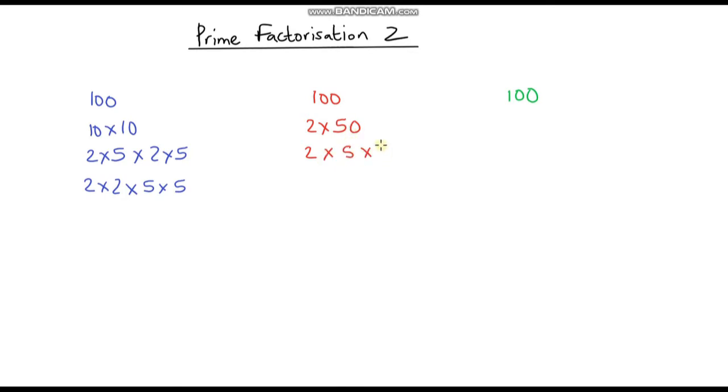We're not quite done because again we can break 10 down into 2 times 5, so this is 2 times 5 times 2 times 5 times 2 times 5, and if we put them in order, 2 times 2 times 5 times 5. Notice our final answer is exactly the same as this one; we just got there in a different way.